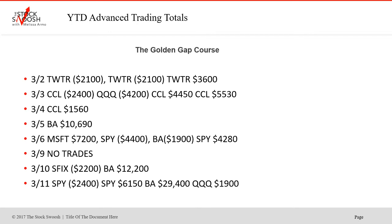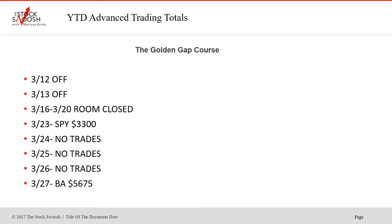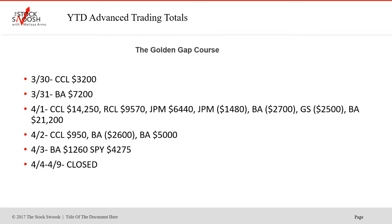The 11th, SPY lost, SPY won, BA winner — BA is almost in every one here — and the Qs winner. Off the 12th and 13th, room was closed. SPY winner, no trades on the 24th, 25th, 26th. 27th was BA winner, 30th was CCL winner, BA was a winner on the 31st.